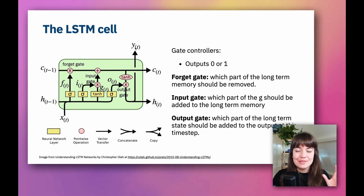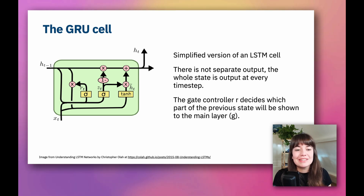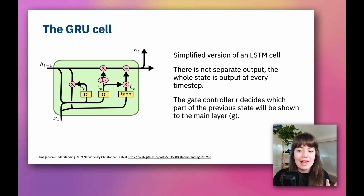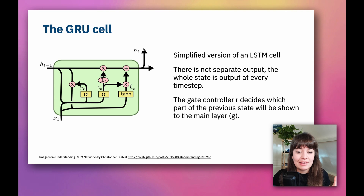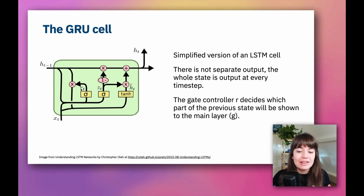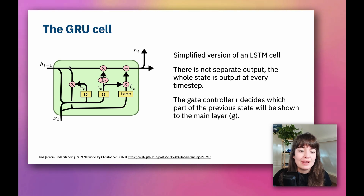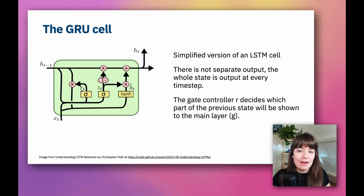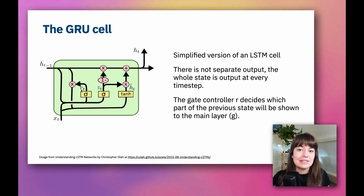Another type of cell is called the GRU cell. The GRU cell is basically a simplified version of the LSTM cell, with less happening. There is no separate output — the hidden state passed to the next time step and the output are exactly the same. The gate controller R decides which part of the previous state will be shown in the main layer — the one passed through the hyperbolic tangent — and which part of the previous state is added to the output of this time step.